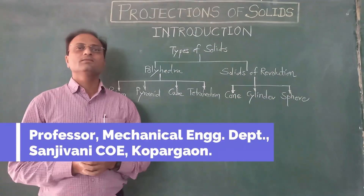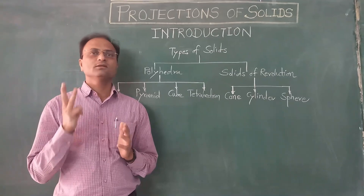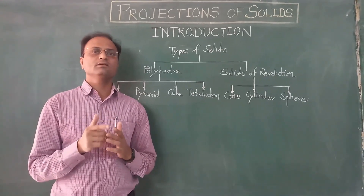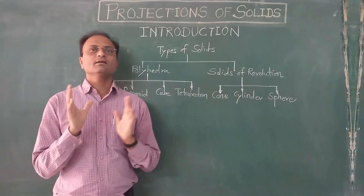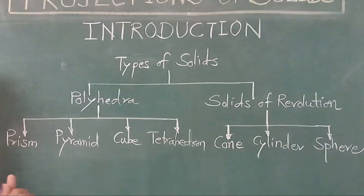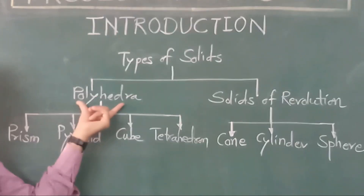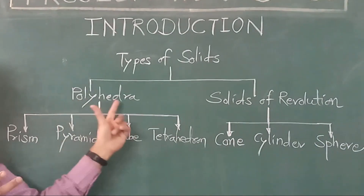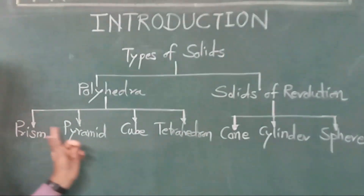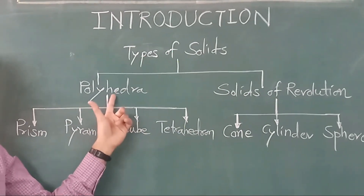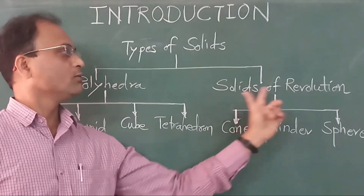A solid is an entity or object which has 3 dimensions: length, height, and width. There are different types of solids. There are basically 2 types — one category called polyhedron, and collectively the group is called polyhedra. The other category is solids of revolution.